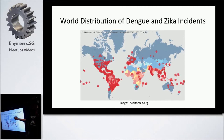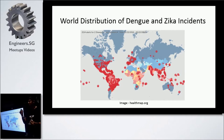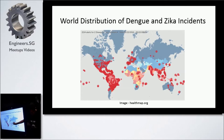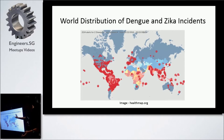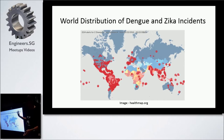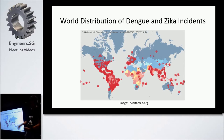This is a screenshot I picked from Health Map, an open source project where you can see disease incidents all over the world. This map covers a period of three months and highlights dengue and Zika incidents worldwide. You can see a major portion of the globe is covered with red dots — it's a big problem.